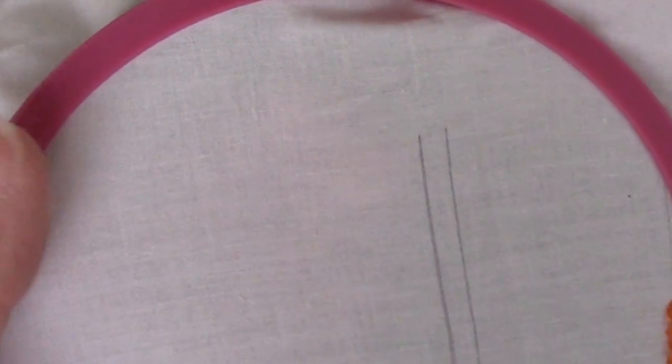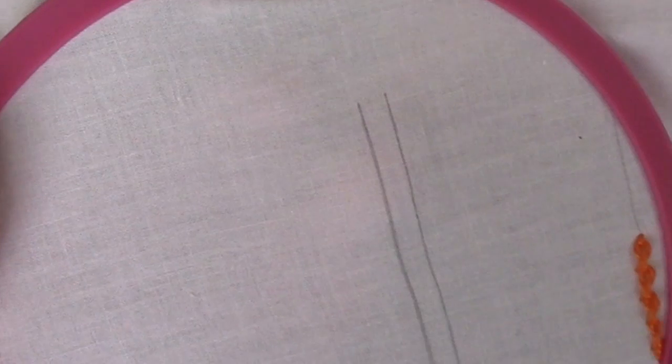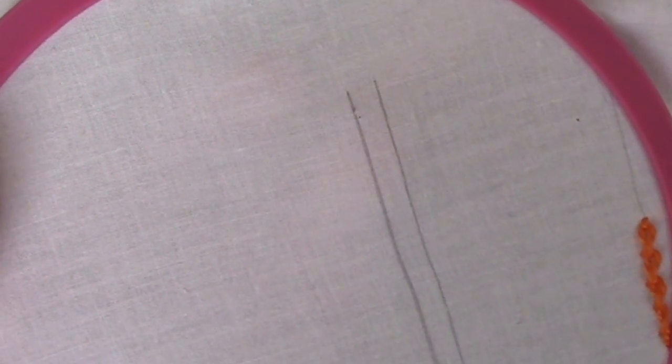The knotted blanket stitch, more frequently in printed media called the Antwerp Edging Stitch, starts out just like the blanket stitch.